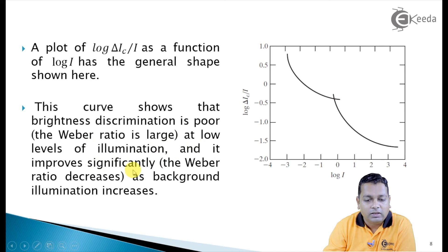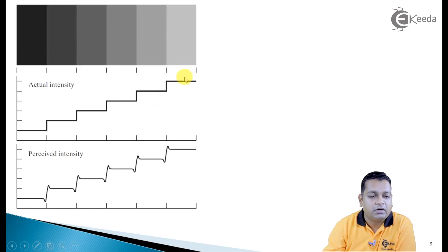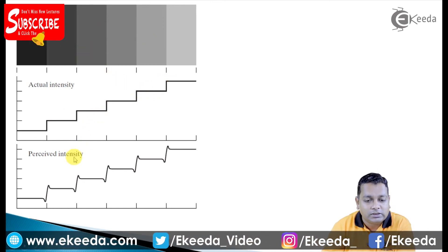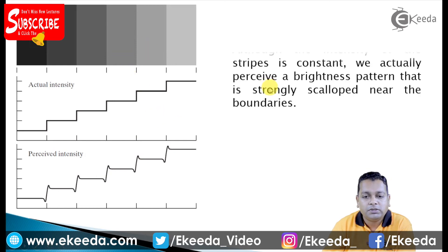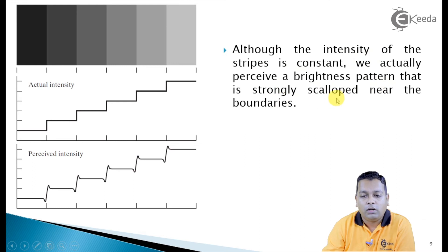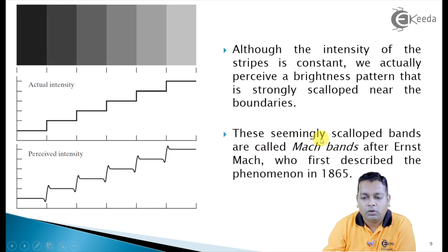Further, we observe the Mach band effect. Here we plot perceived intensity versus actual intensity. Although the actual intensity of each slab or strip is constant, at the edges where we switch from one part to another, we perceive a brightness pattern that varies strongly near the boundaries. We judge variation at the edges even though the intensity of the strips is constant.